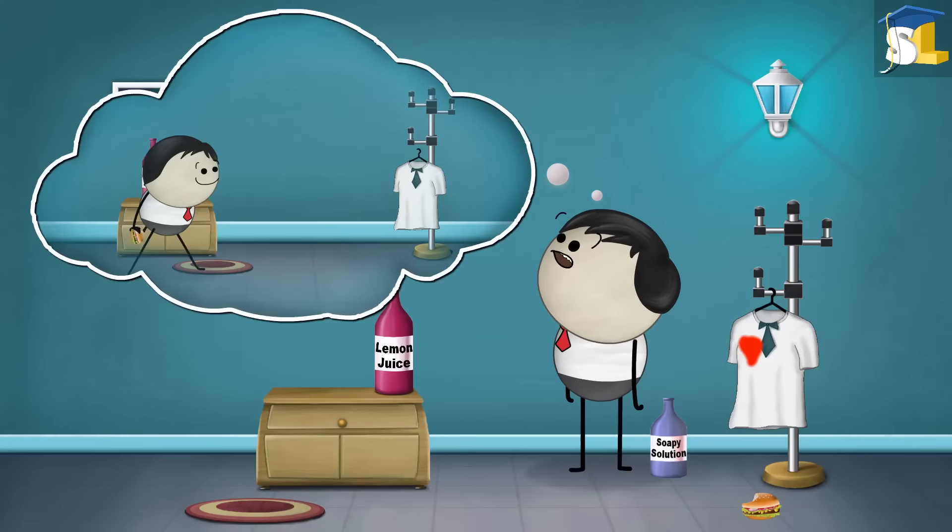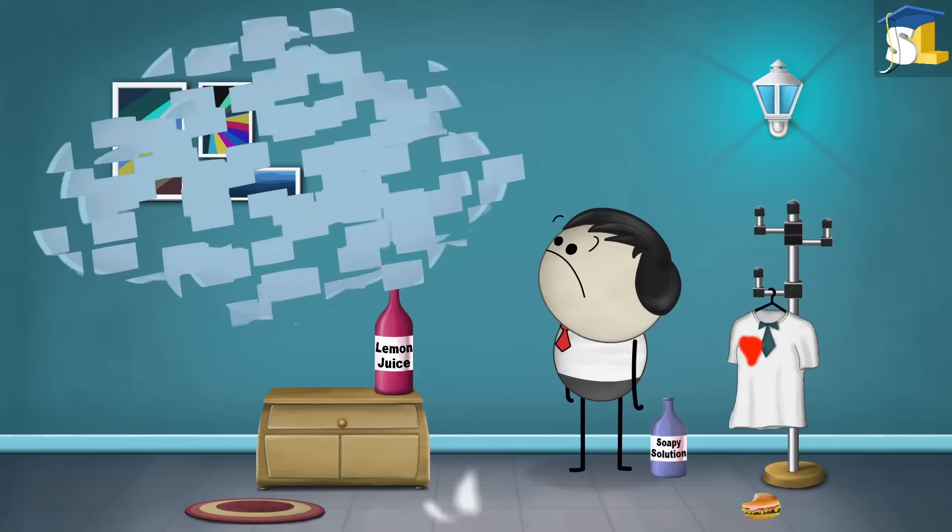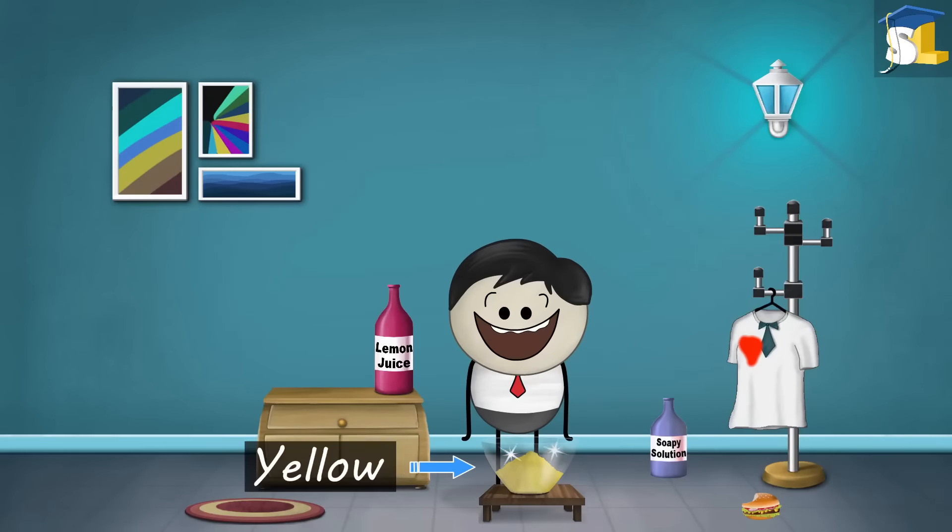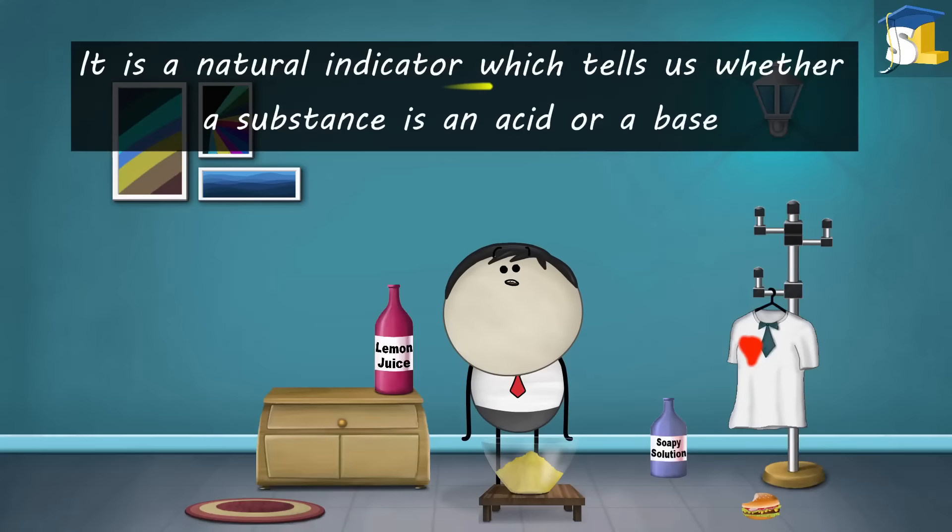This happened because the food which fell on the cloth had turmeric in it. The color of turmeric is yellow. It is a natural indicator which tells us whether a substance is an acid or a base.